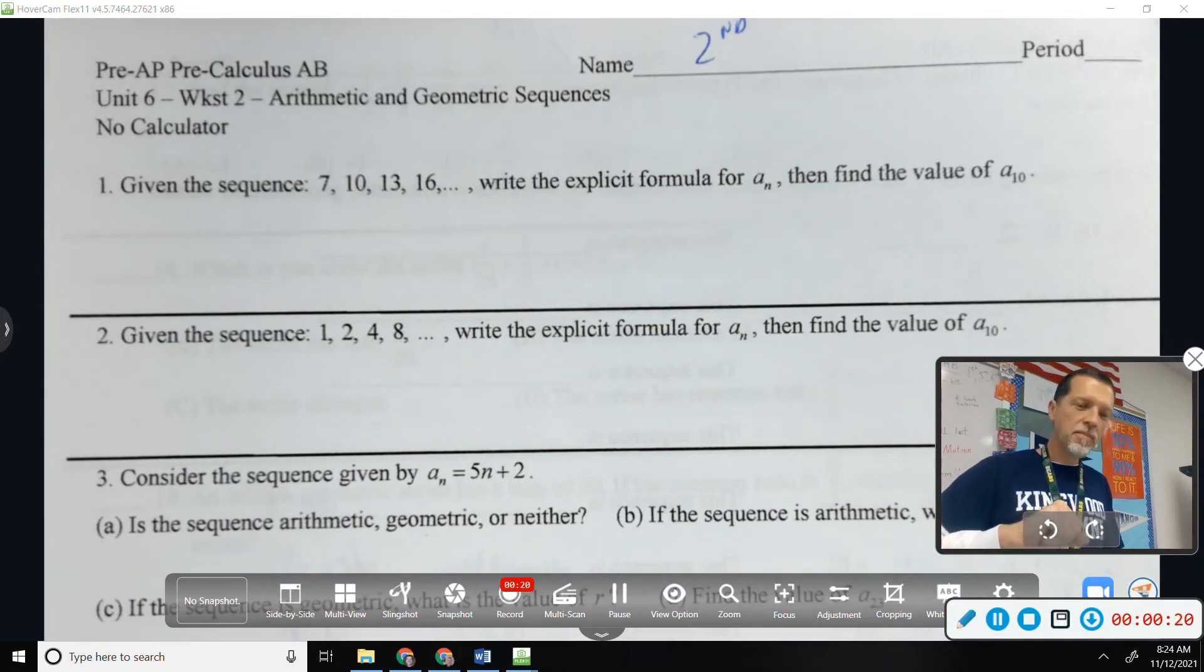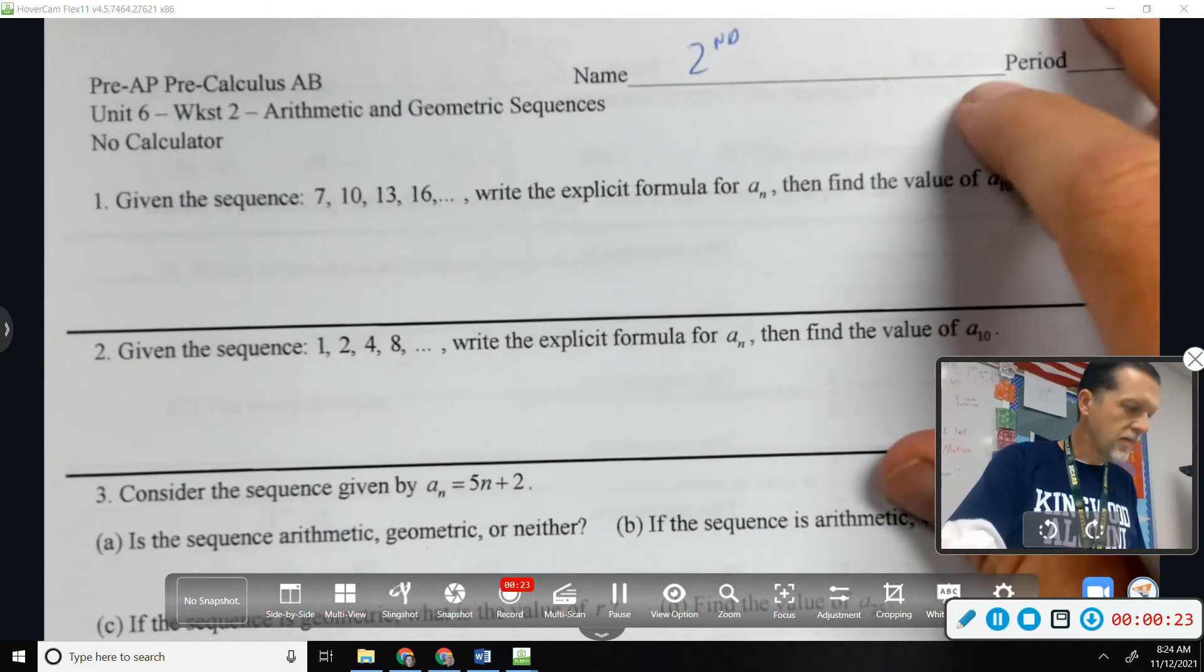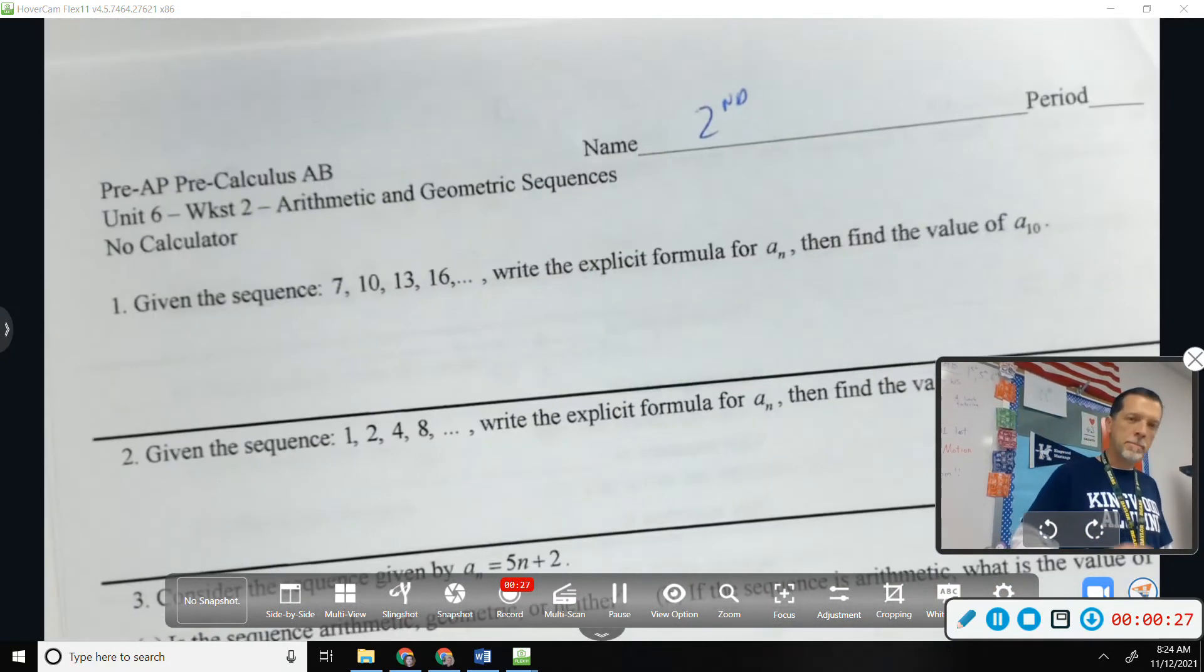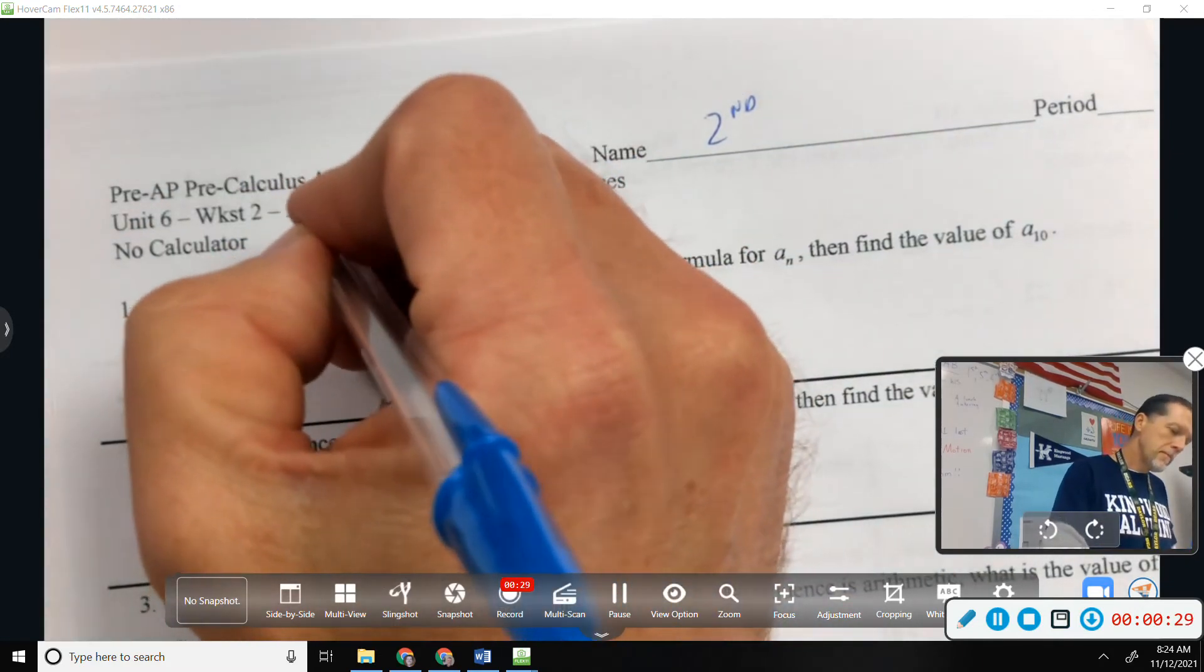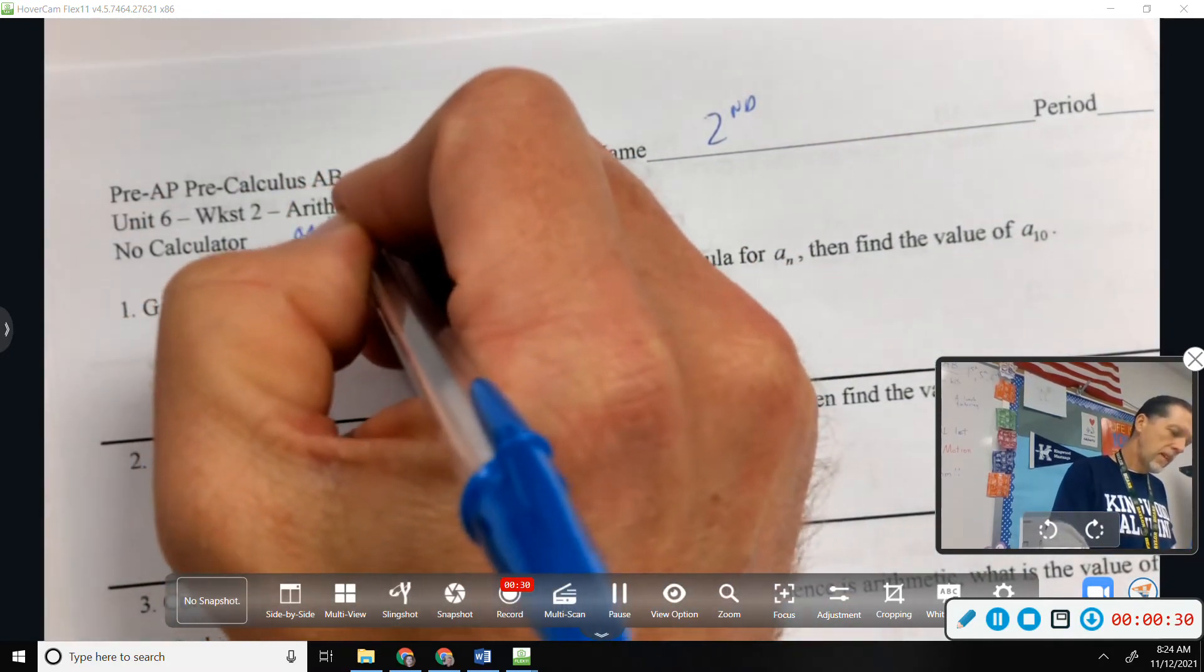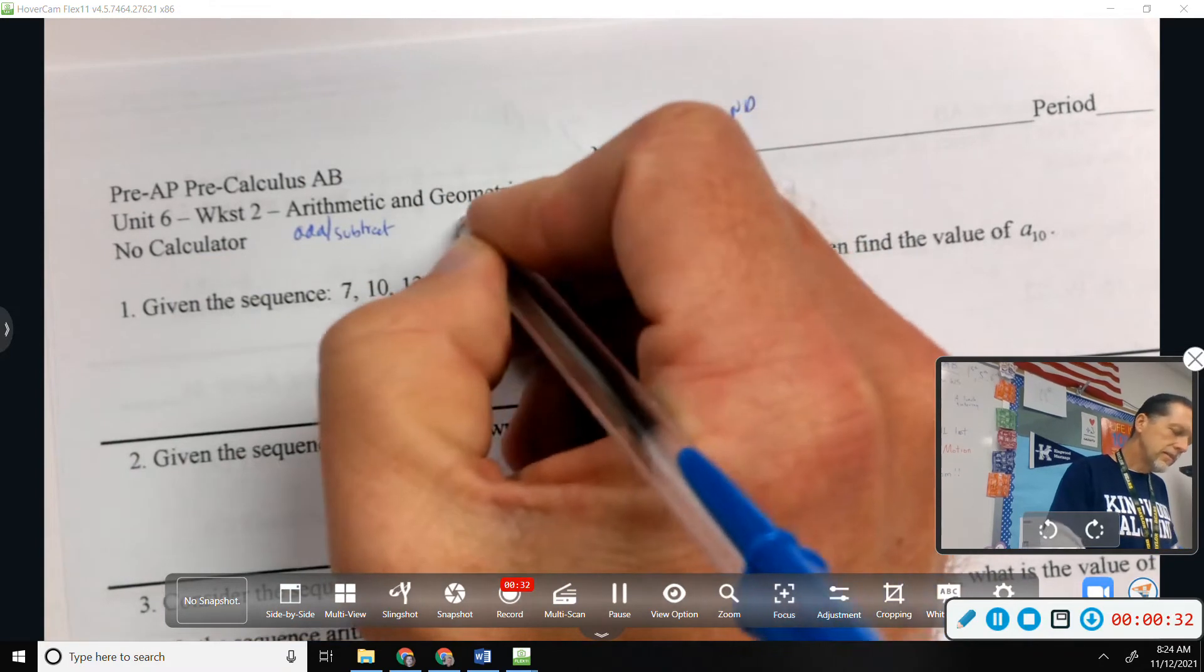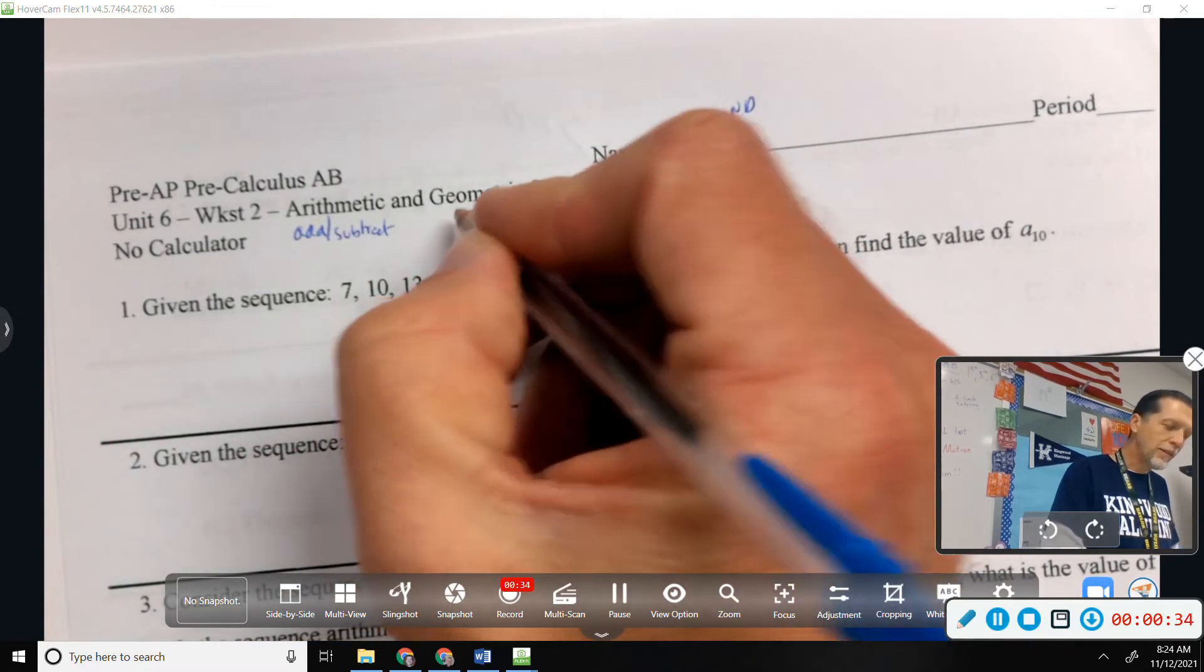If it's addition or adding a negative, it's arithmetic. If it's multiplying or dividing, it's geometric. Most of the time, if it's fractions, it's not a negative. If it's weird, it's neither.